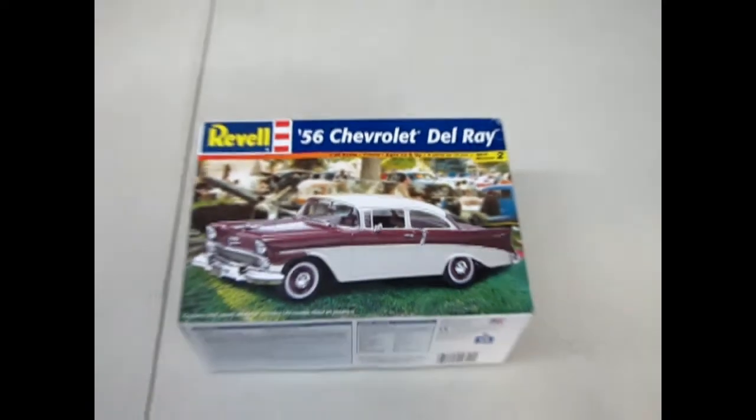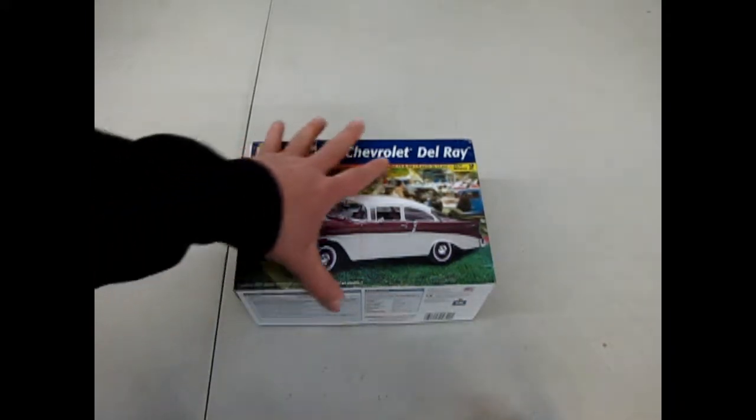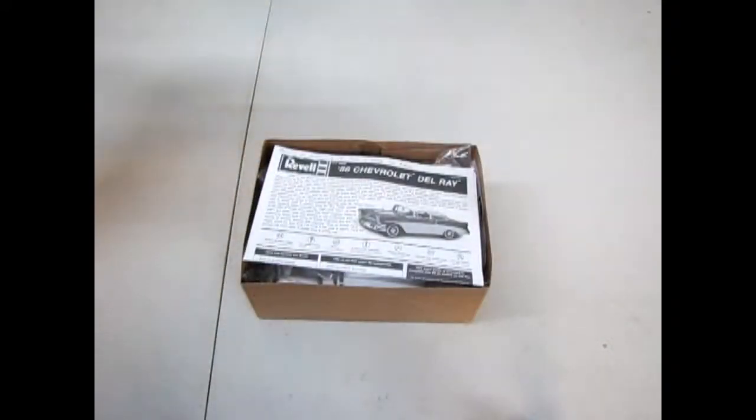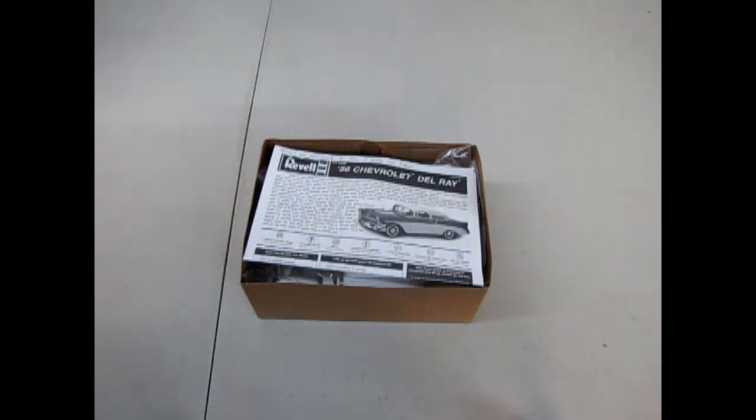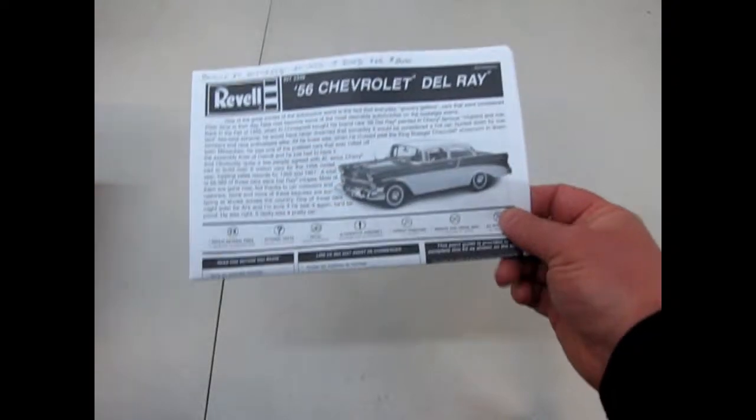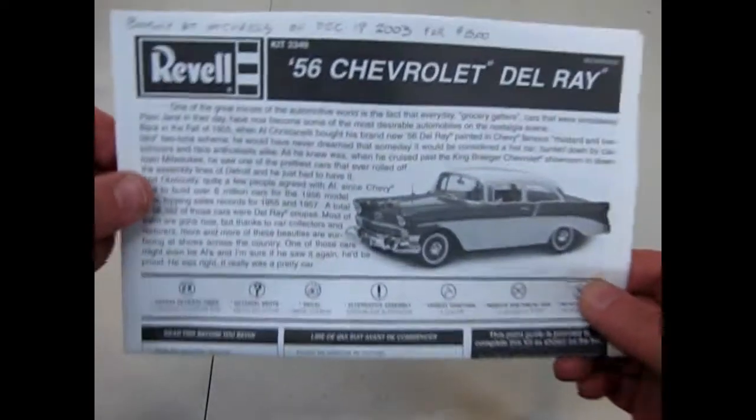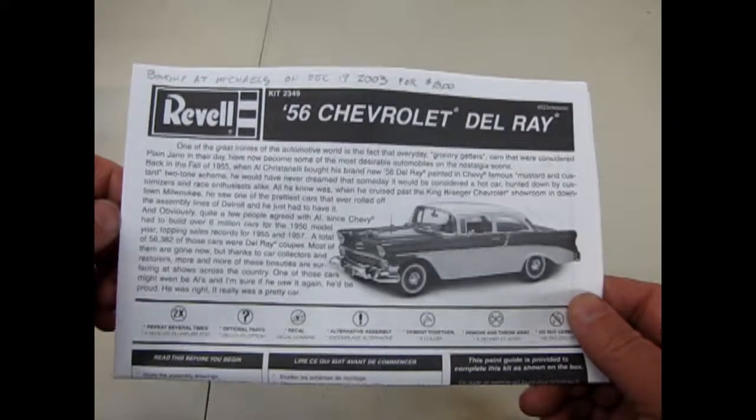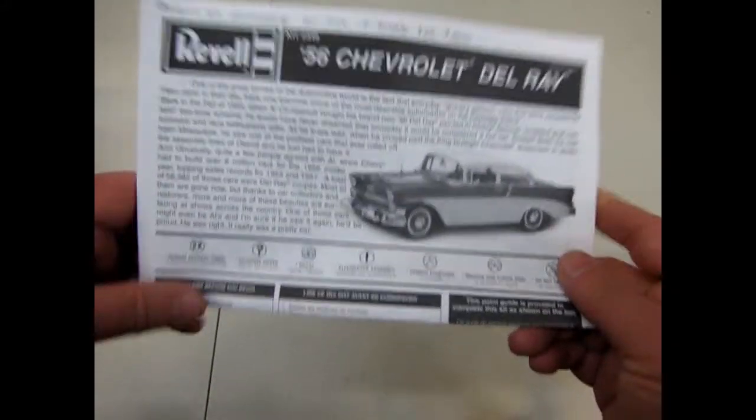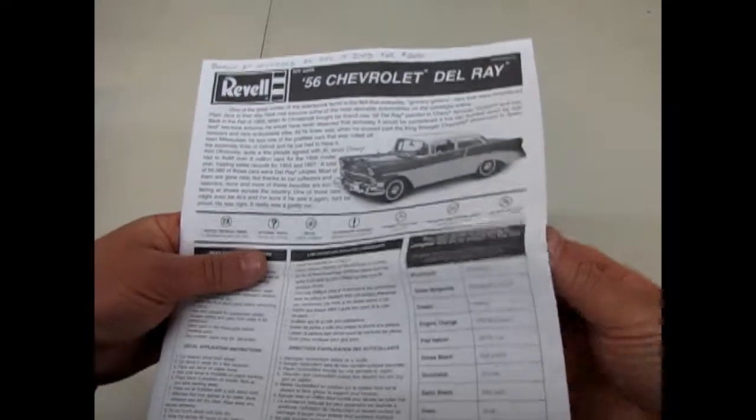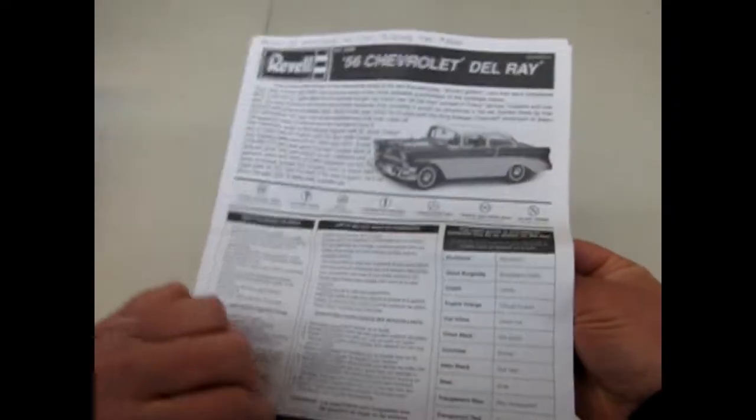Let's take the lid off this 56 Chevrolet Del Ray. Quite a cool old kit. I'll just pull it up here. Skill Level 2 by Revell. We've got these great instruction sheets. As you can see, bought at Michael's on December 19, 2003 for $15. Inflation has gone up in 15 years. You can't buy them this cheap anymore.